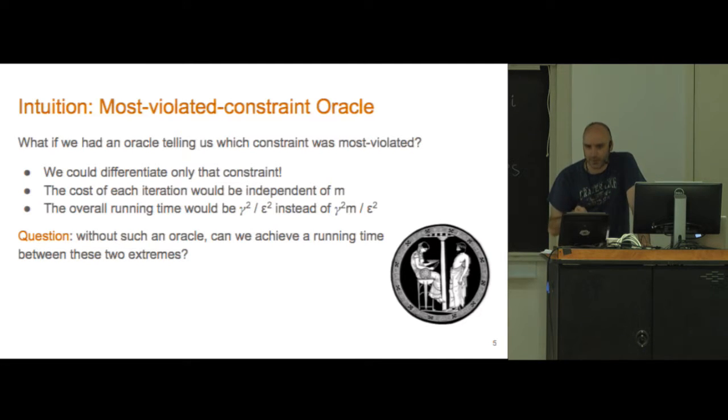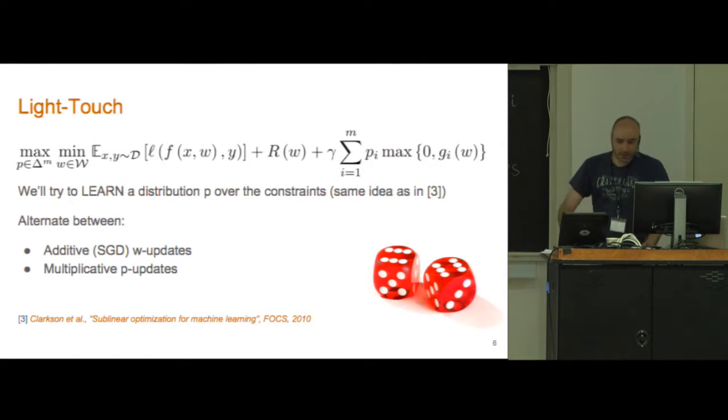Can we find an algorithm that doesn't assume we have an oracle that tells us which constraint is the most violated? That's basically what we're going to try to do here. Our answer to that question is yes, and we call that algorithm light-touch.